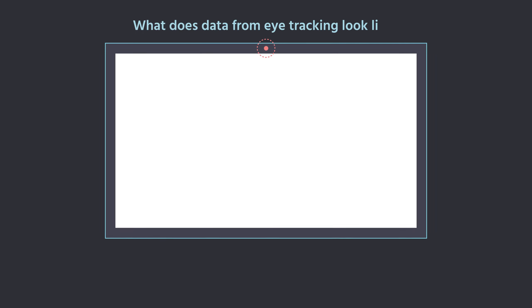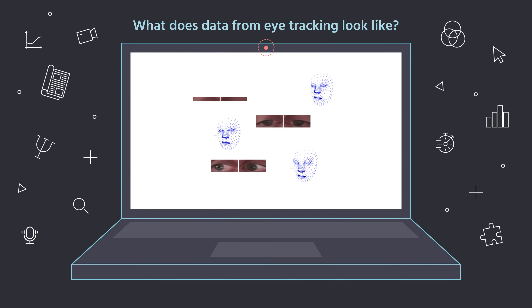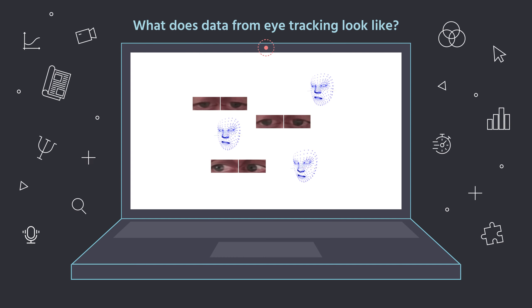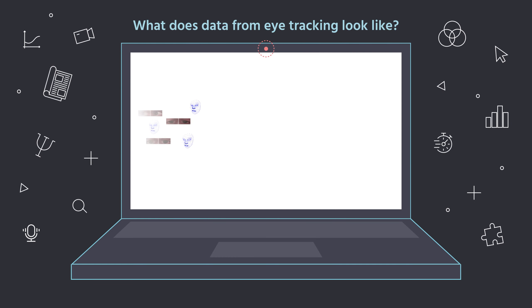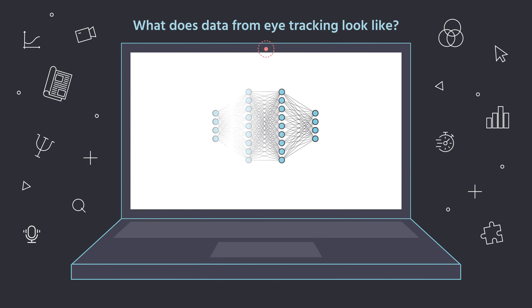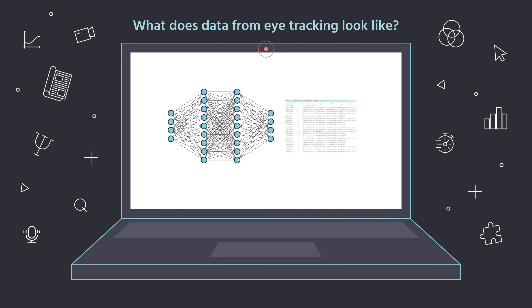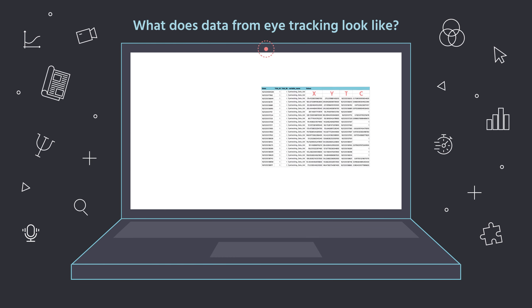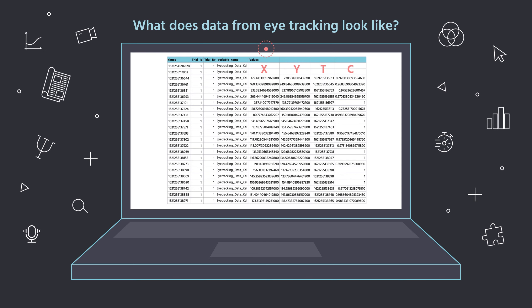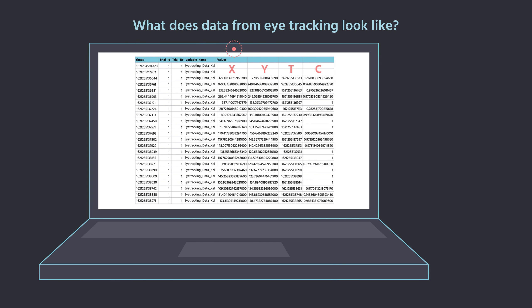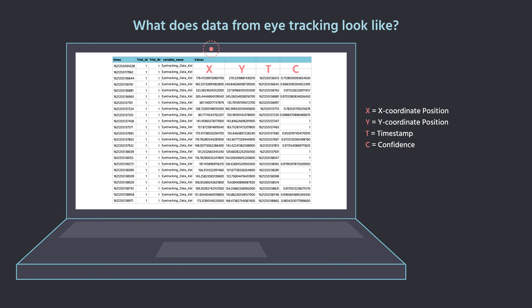The image stills gathered during the eye tracking experiment are fed into our powerful neural network, which then returns data points like x and y coordinates, time stamps, and confidence intervals for those measurements.